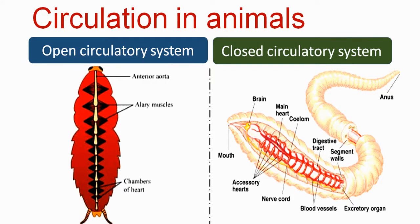In the open circulatory system, the respiratory pigment hemoglobin is dissolved in plasma, and red blood cells are absent. Because of that, in such animals blood is colorless or white.